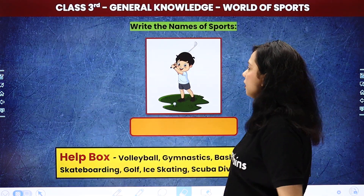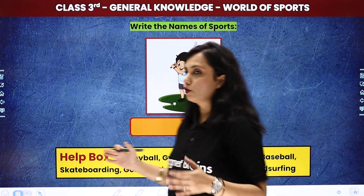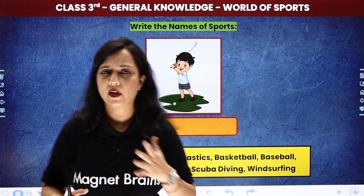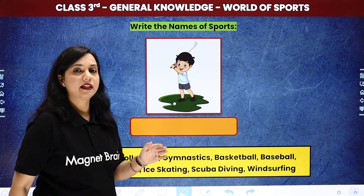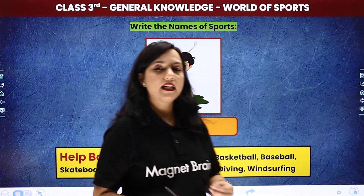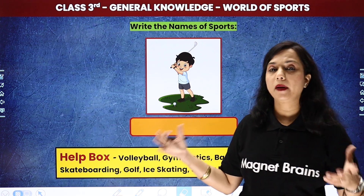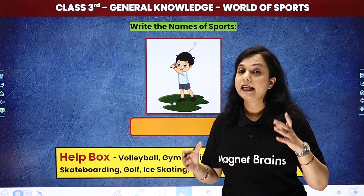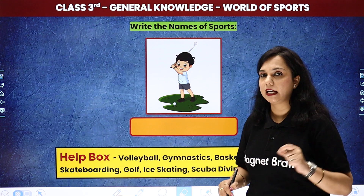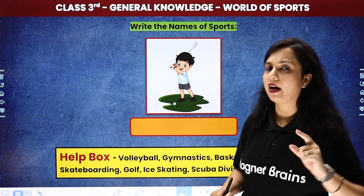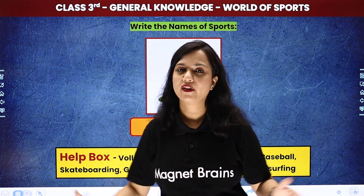What is the first question? Write the names of sports. Children, it's a very simple exercise. You have been shown pictures, and in those pictures you can see which sport is being played. If you don't know the name, you have to find it from the help box, write the right answer, and solve the exercise.